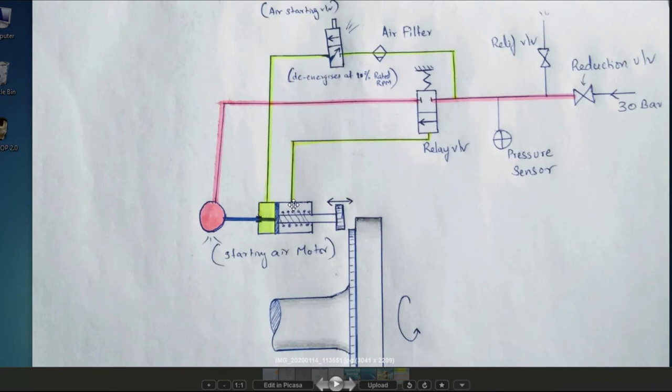Now there is no air going into the air level. This is blocked. Then, so if there is no air, then this spring will push this thing back to its original position. There is no more air which is admitted to the starting air motor.